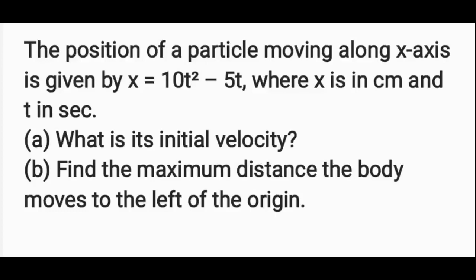Hi guys, so let's see how we can solve this particular question. The position of a particle moving along the x-axis is given by the equation x equals 10t squared minus 5t, where x is in centimeters and t is in seconds. We are requested to find the initial velocity, and also the maximum distance the body moves to the left of the origin.